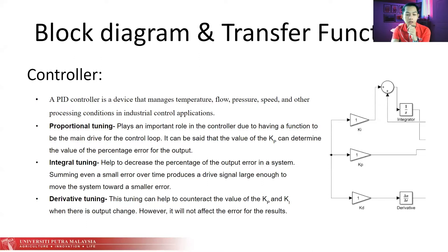The integral tuning function helps to decrease the percentage of output error in the system, summing even a small error over time to produce a drive signal large enough to move the system towards smaller error. Lastly, the derivative tuning function helps to counter the value of Kp and Ki when there is output change. However, it will not affect the error for the results. To obtain the final output result, these three components must be manually changed based on the required value.